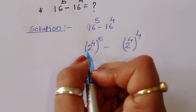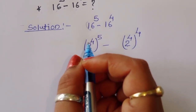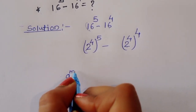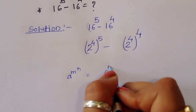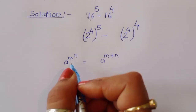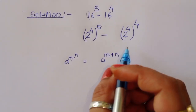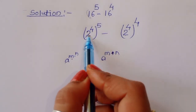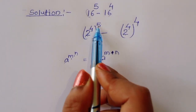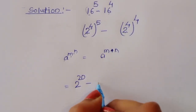Now we have 2 power 4, power 5 and 2 power 4, power 4. We know the formula: a power m, power n is equal to a power m times n. So 2 power 4, power 5 becomes 2 power 20, and 2 power 4, power 4 becomes 2 power 16. So we get 2 power 20 minus 2 power 16.